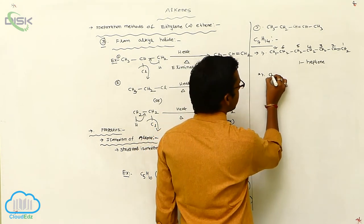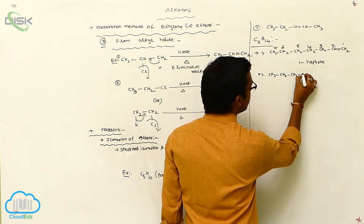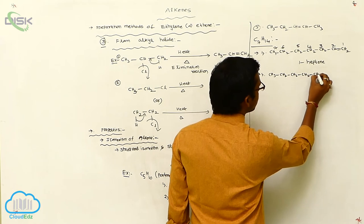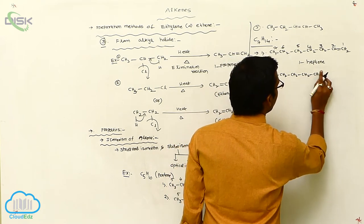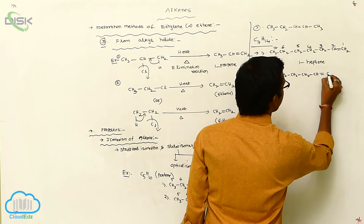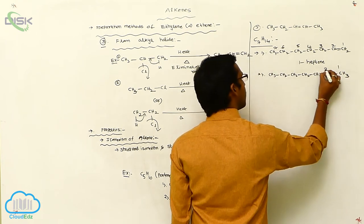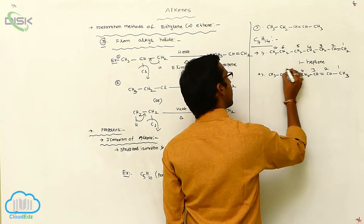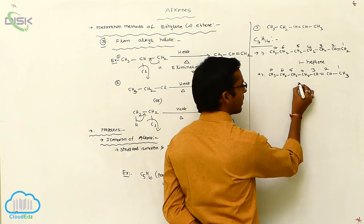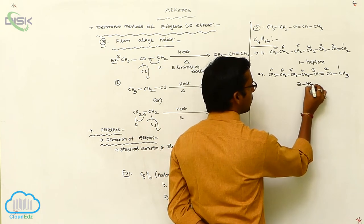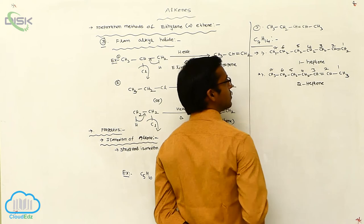Another isomer: CH3, CH2, CH2, CH2, CH2, with a double bond, then CH and CH3. Counting gives 1 through 7. At the second position, the double bond is present. This is your 2-heptene. This is your positional isomerism.